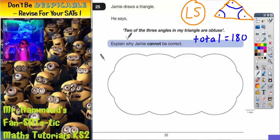Now he is saying that two of the three angles are obtuse. Now remember, obtuse angles have to be bigger than 90. So the smallest it can be and still be bigger than 90 will be 91.